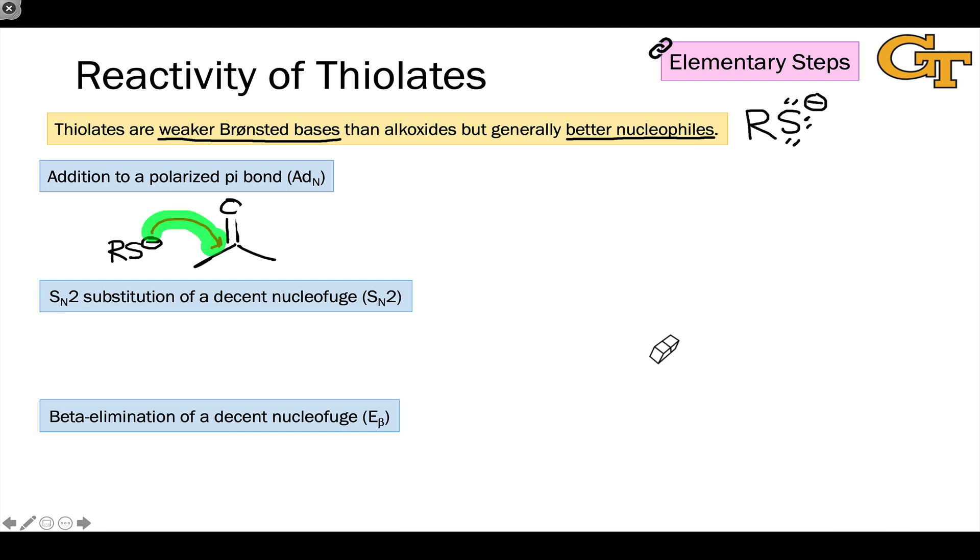And in this elementary step, the anionic sulfur donates a pair of electrons to the electrophilic carbon atom, which is partially positively charged, and a pair of electrons heads up to the more electronegative atom in the pi bond, oxygen.